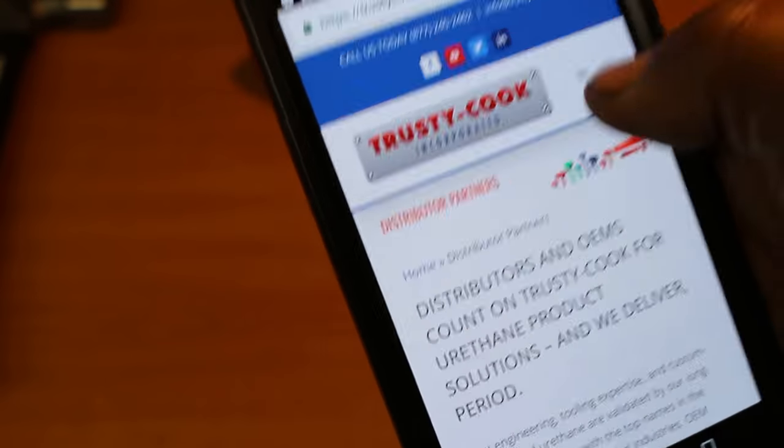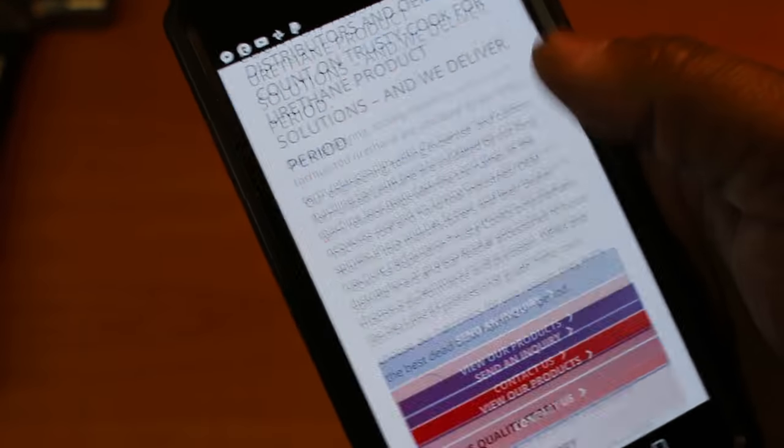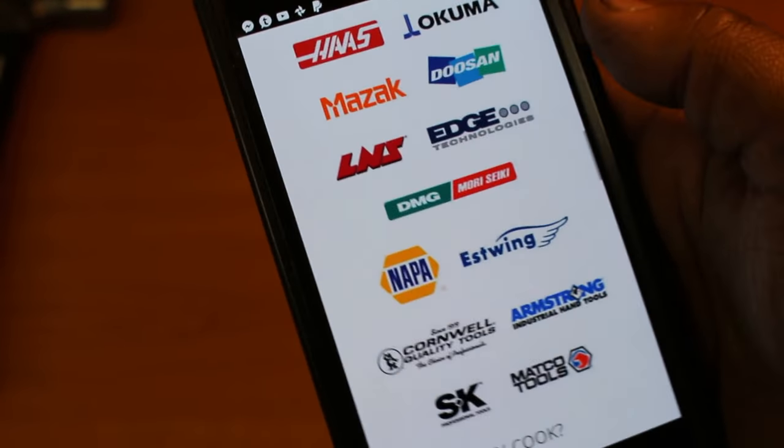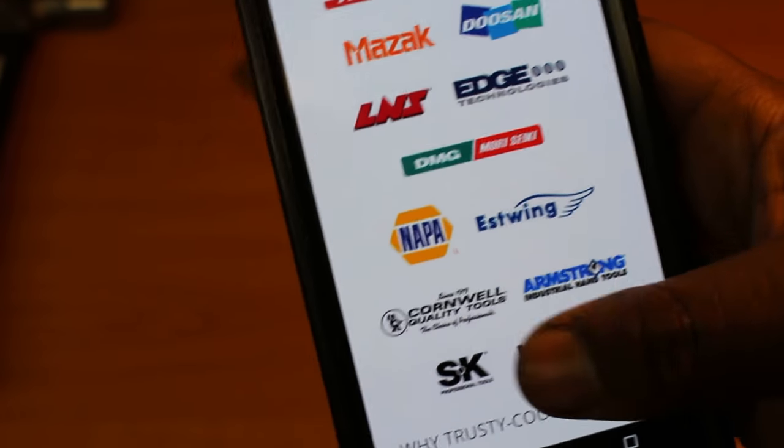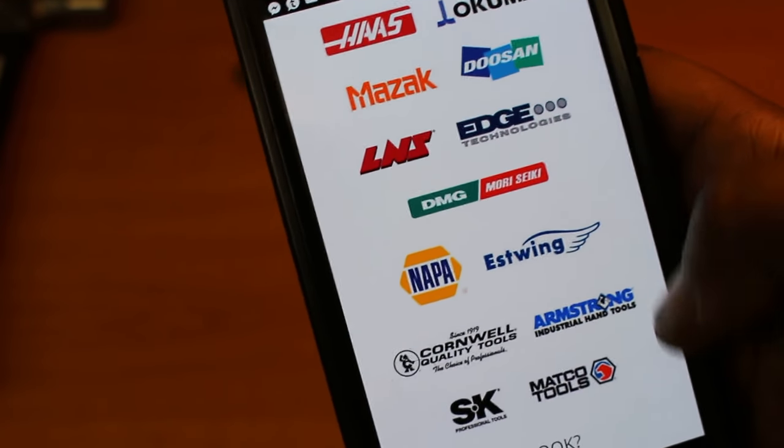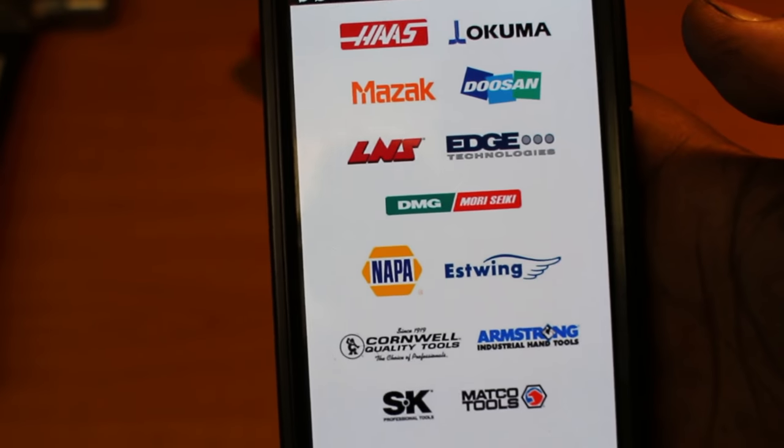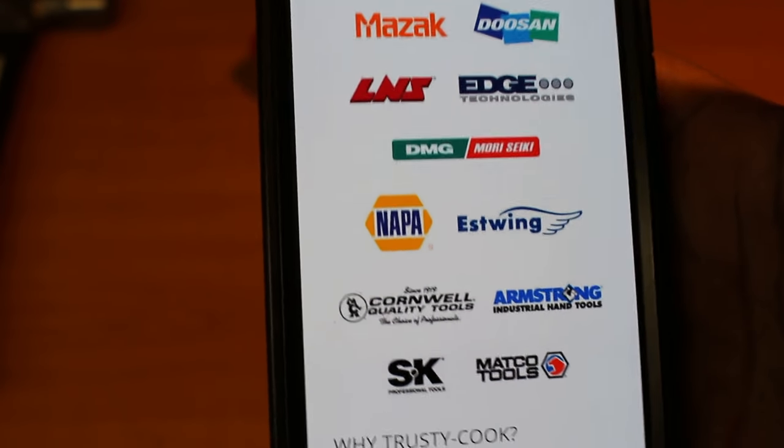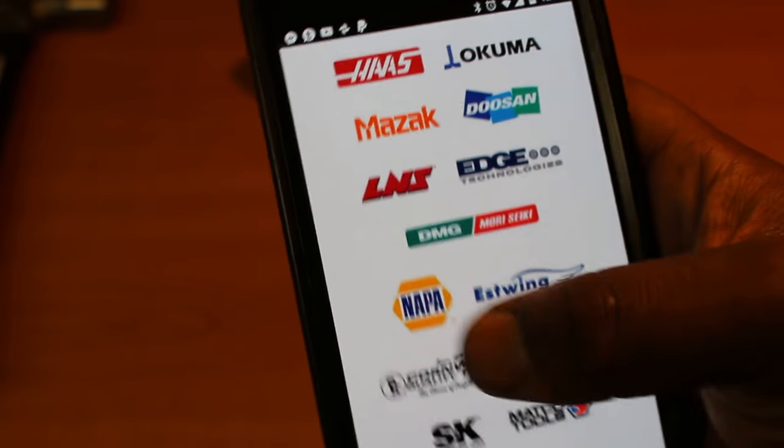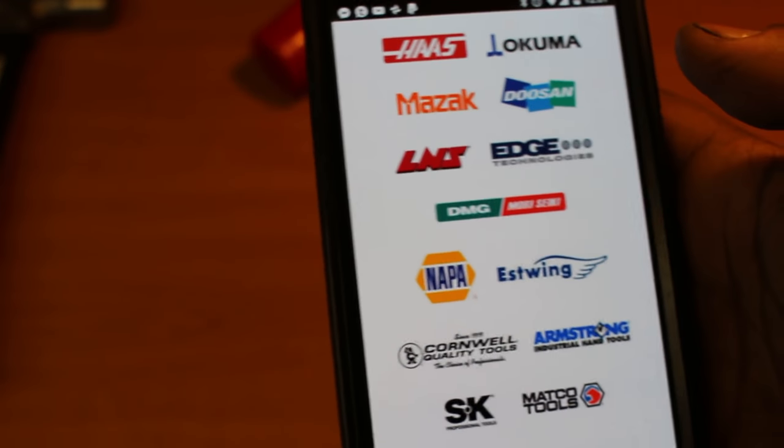This is Trusty Cook's official website. I have it loaded up on my phone here. But if you come under distributor partners, they literally list who they provide for on their website. So I don't think this is necessarily all of the brands they provide for, but this just gives you an insight of who definitely they do provide for.